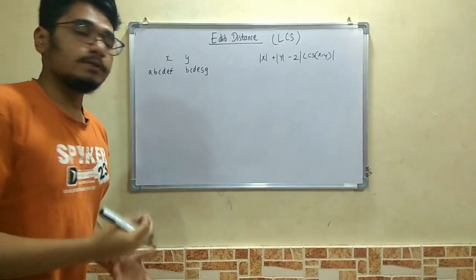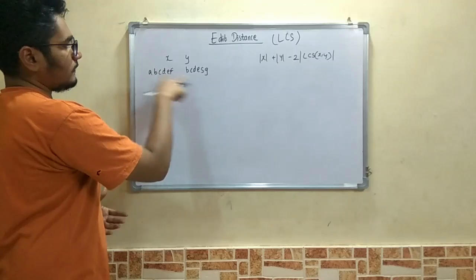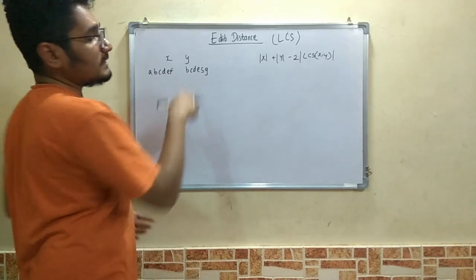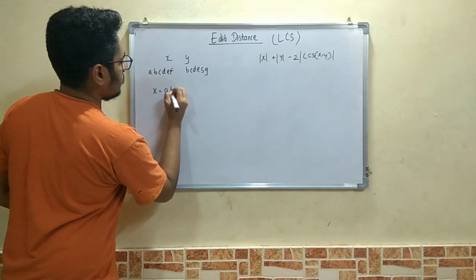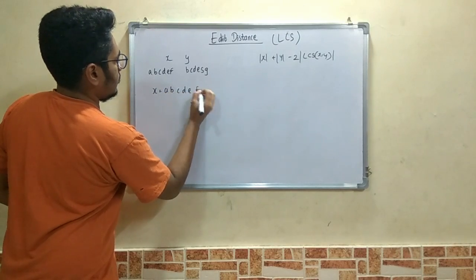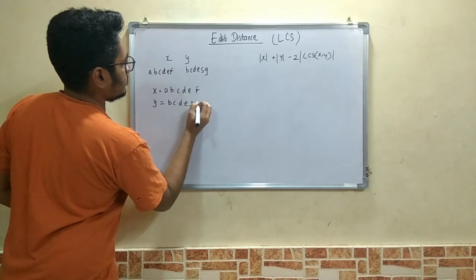We have been given two points, x and y, and a set of words: a b c d f and b c d e s g. Now we will assign each of these, that is x equals a b c d f and y equals b c d e s g.